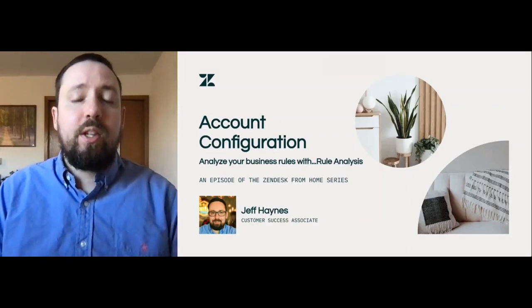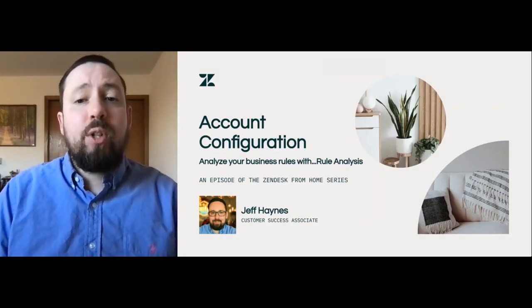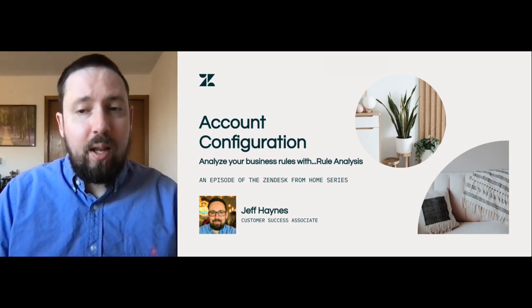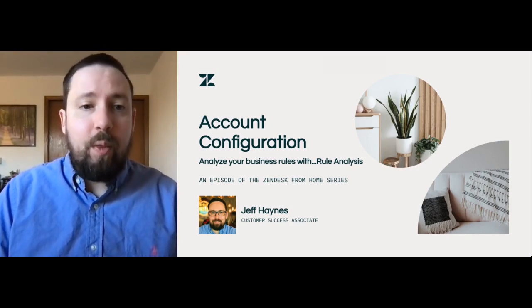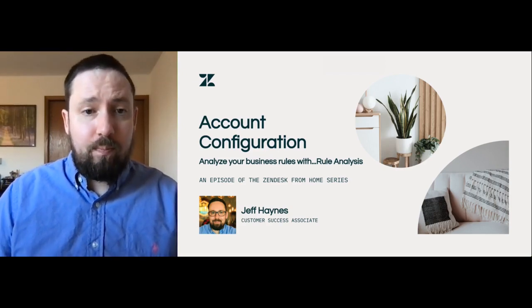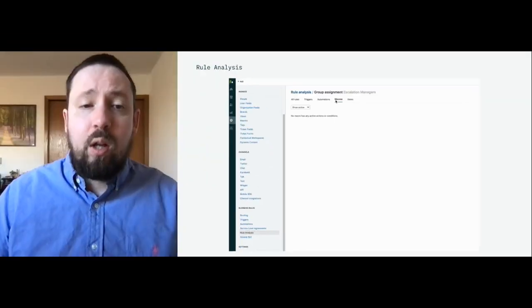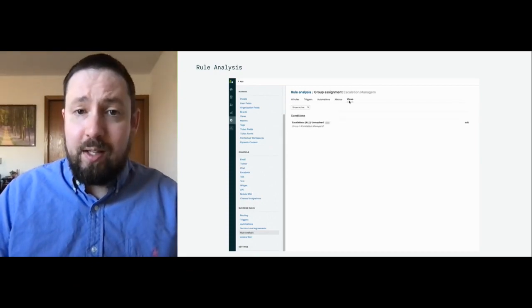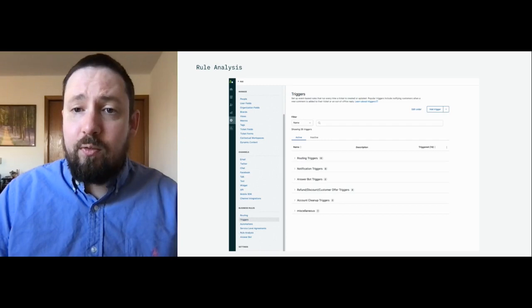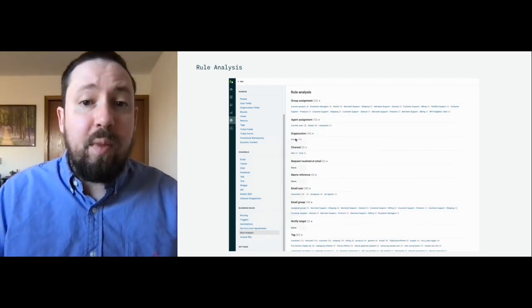Hi everyone, Jeff here with the Zendesk customer success team. Today we're talking about account configuration and in particular how to easily analyze your business rules with the aptly titled feature: rule analysis. Rule analysis, in my experience as a customer success manager at Zendesk, is perhaps one of the most overlooked but most powerful features within Zendesk Support at the enterprise plan level, especially from the perspective of a busy Zendesk admin. Located in your business rules section in the settings panel, rule analysis is an enterprise-level feature that provides admins with a bird's-eye view of their business rules based on ticket properties being utilized.